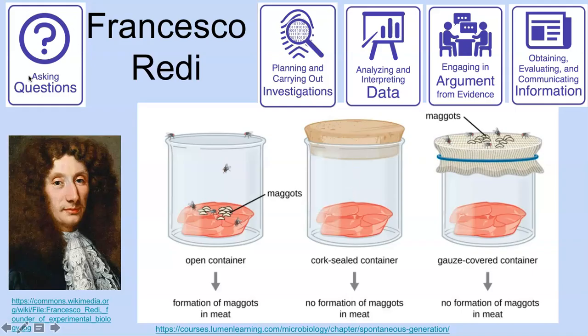He asked the right questions. He then planned and carried out an investigation to provide evidence for an answer to his question. He analyzed and interpreted his data, and then using that data and evidence, he argued that there was no such thing as spontaneous generation. He then attempted to communicate his discoveries with the world. These are all science and engineering practices that you will learn more about in the next video, but as I said, today we are focusing on asking questions.